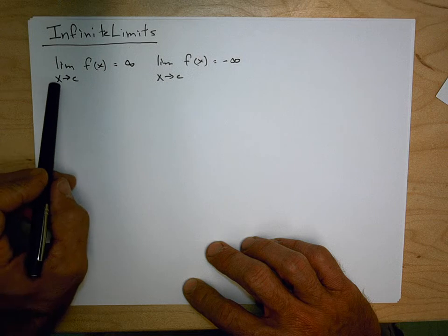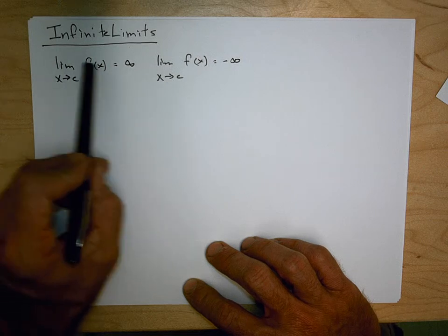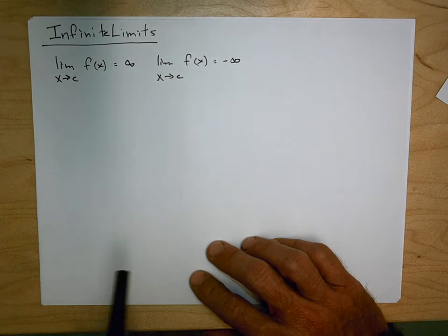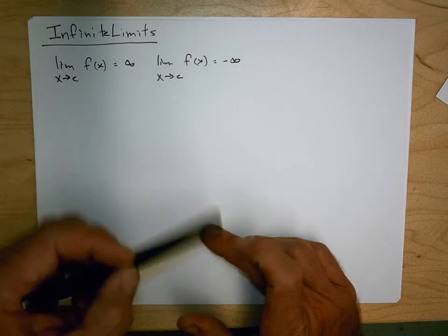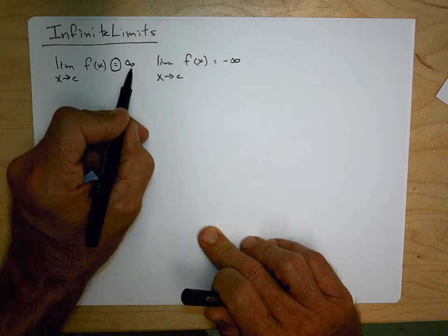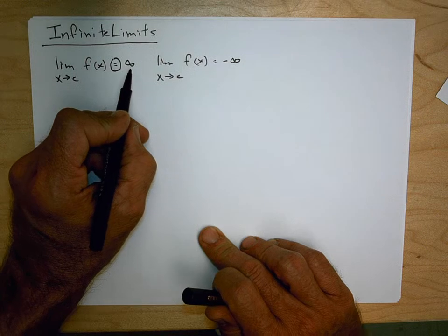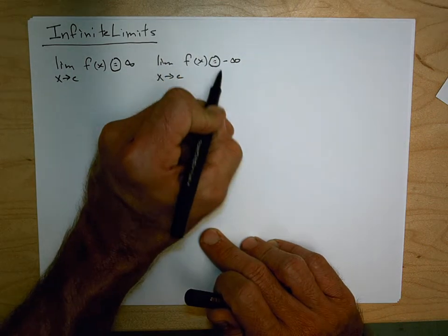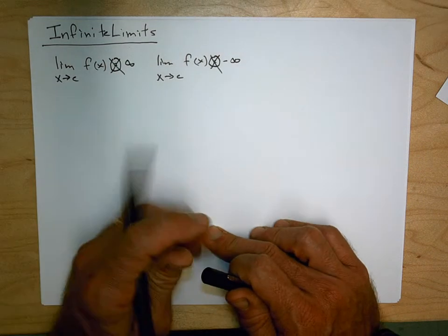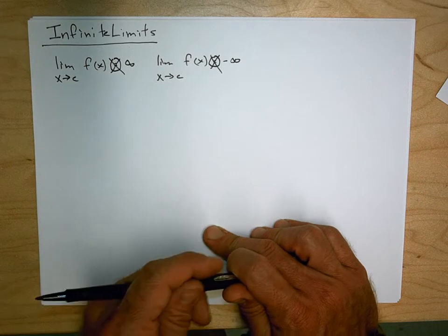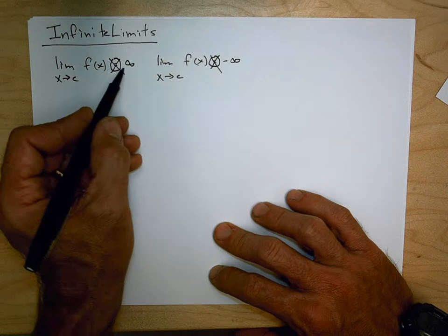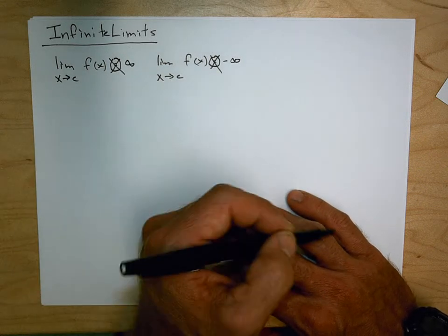You might see this notation: the limit as x approaches some number c of a function equals infinity or equals negative infinity. There are two issues here. One is this issue with 'equals' — how can we equal infinity? Infinity is not a number. I don't like this equals notation because it reinforces the misconception that infinity is a number, and when you say 'equals,' that's what we do with numbers.